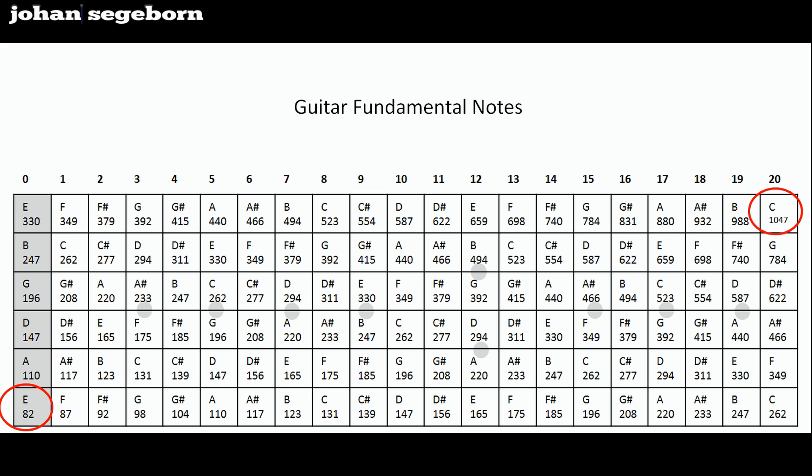So here you have an entire fretboard worth of the fundamental notes. You can see that they range from 82 Hertz for the lower open E-string down to about one kilohertz. So this is the meat that should be provided by the guitar and that has to be balanced against the bass and other more meaty instruments.